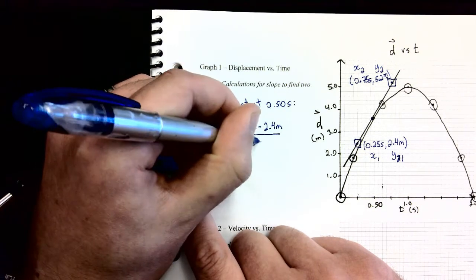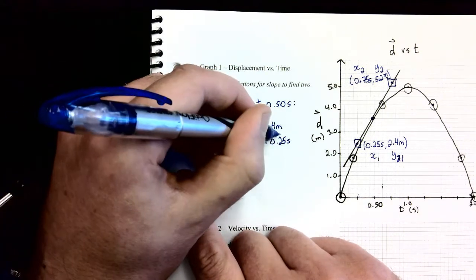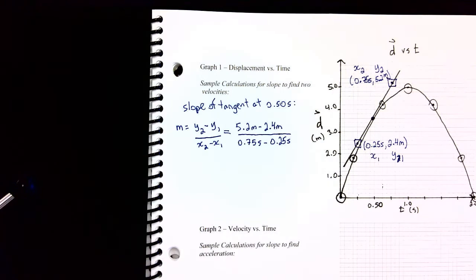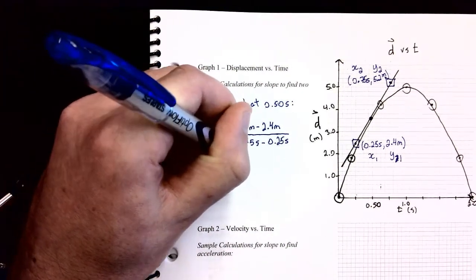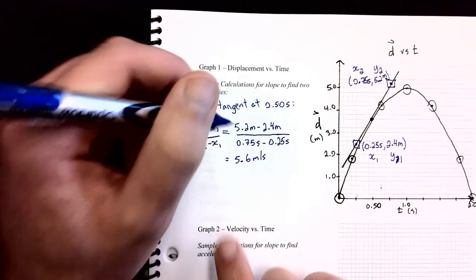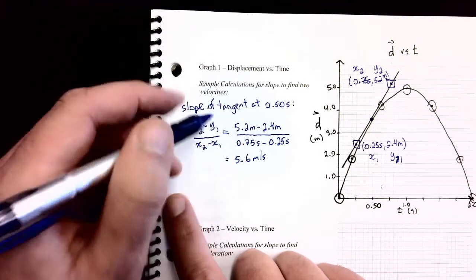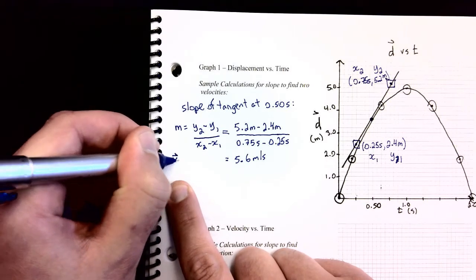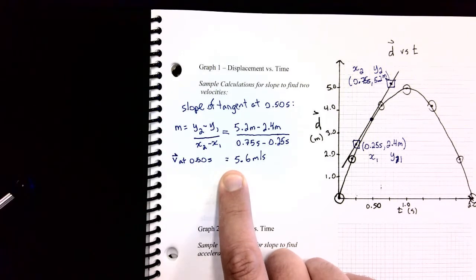And it's very important that you put in the units. You'll notice that I'm not just putting in the numbers here. I'm putting in the meters, and I'm putting in the seconds, and I need you to do the same thing. Then I'm going to type that through my calculator. And I am getting a slope of 5.6 meters per second. Now that slope of the tangent line corresponds to the velocity at 0.50 seconds. So I can say the velocity at 0.50 seconds is equal to 5.6 meters per second.